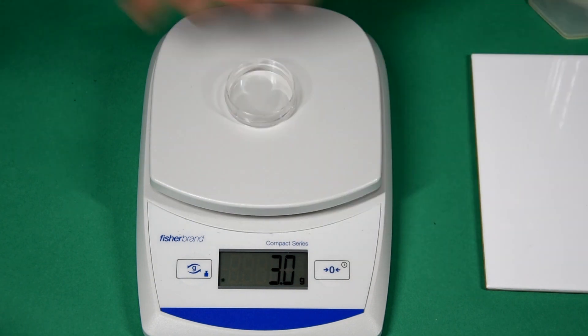We start by measuring out a number of weighing boats containing 0.3 grams of calcium hydroxide. Note the balance was tared at the beginning.